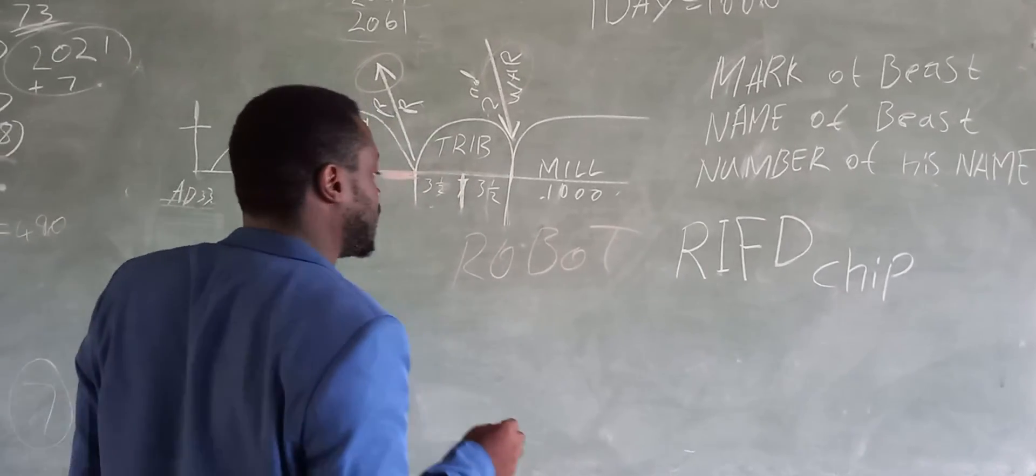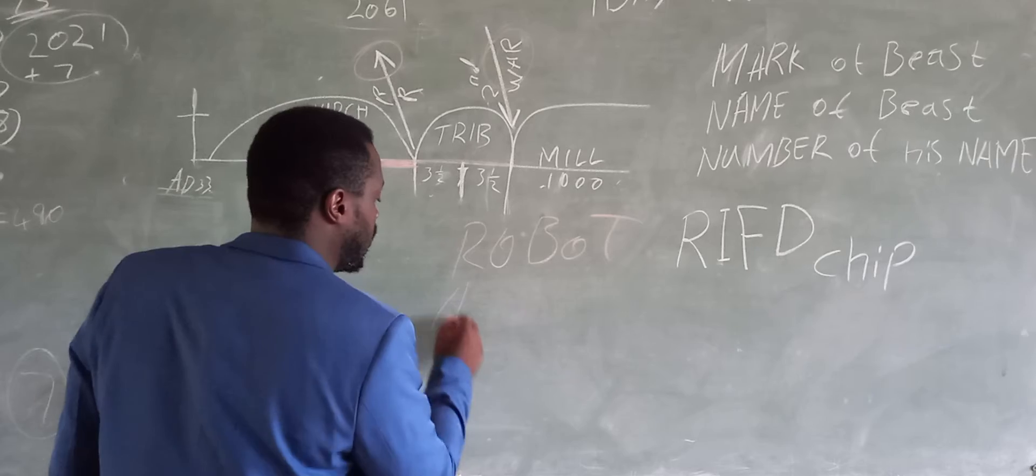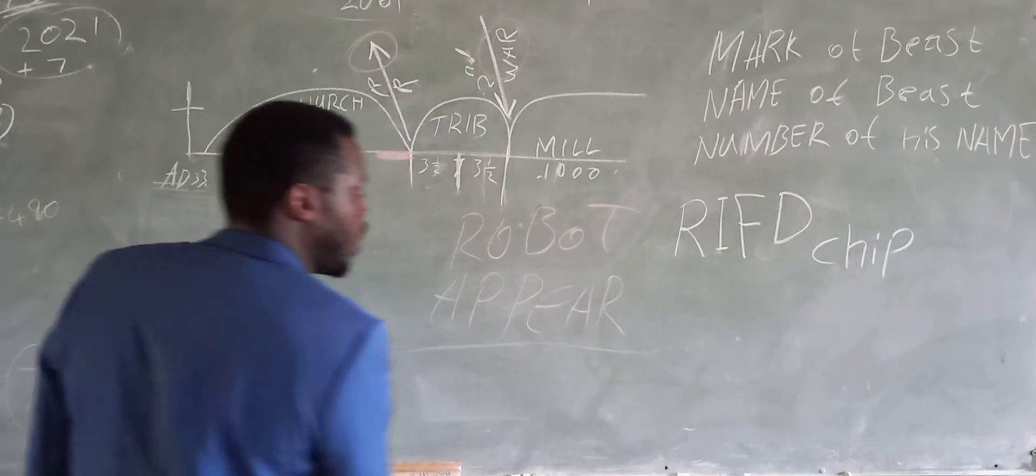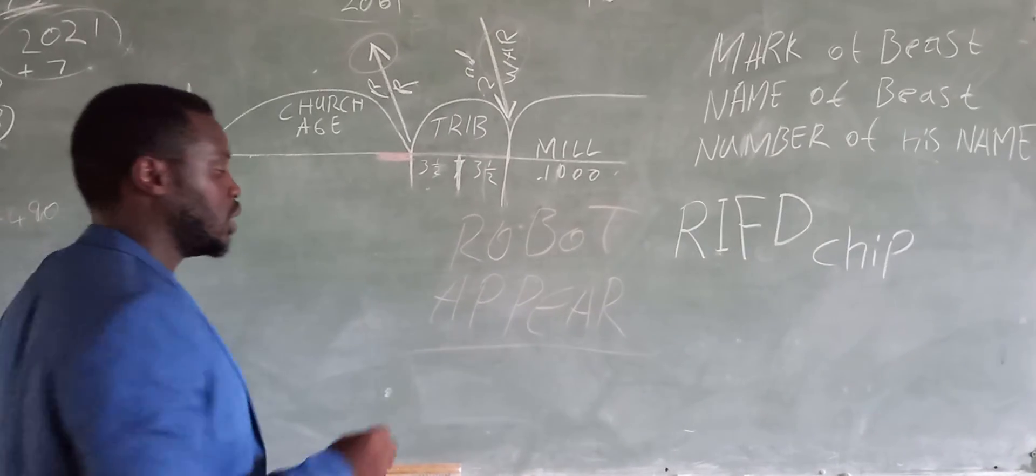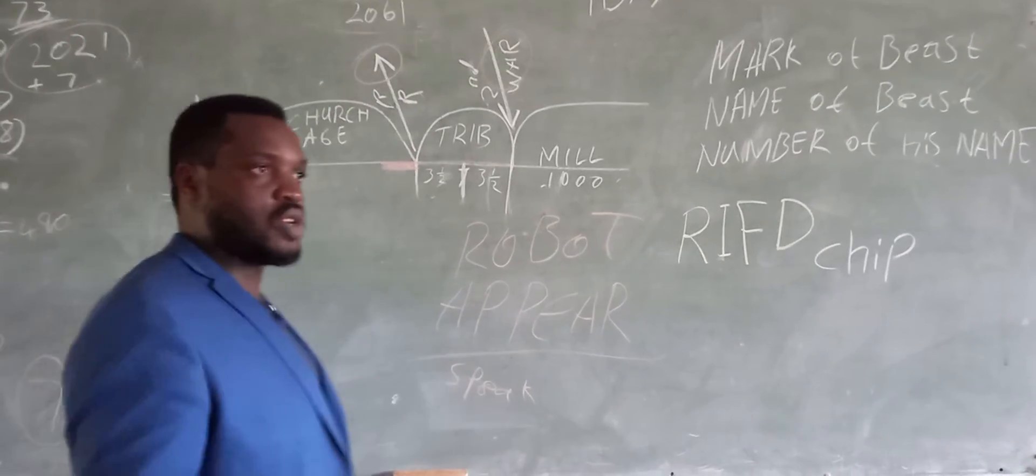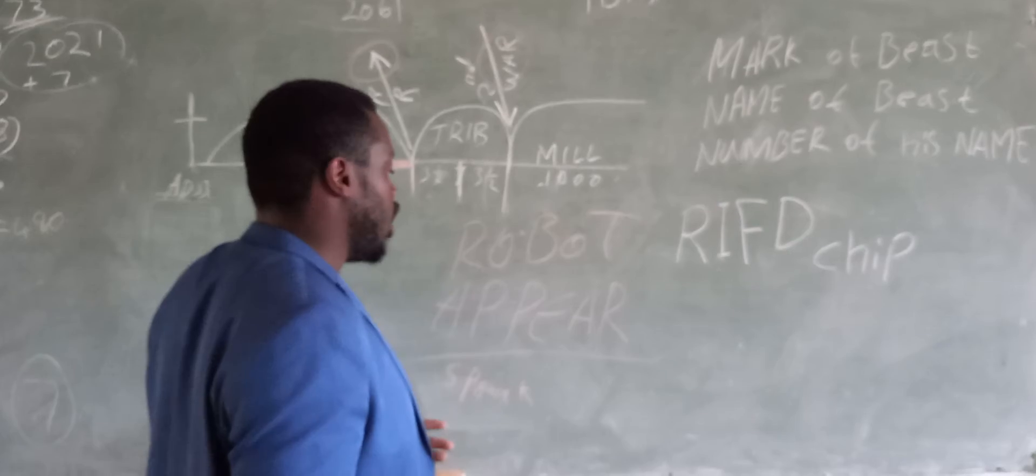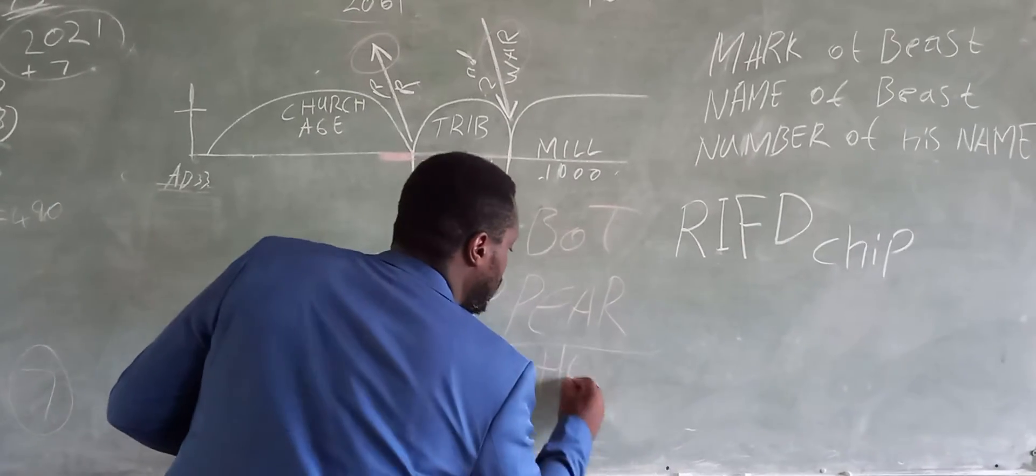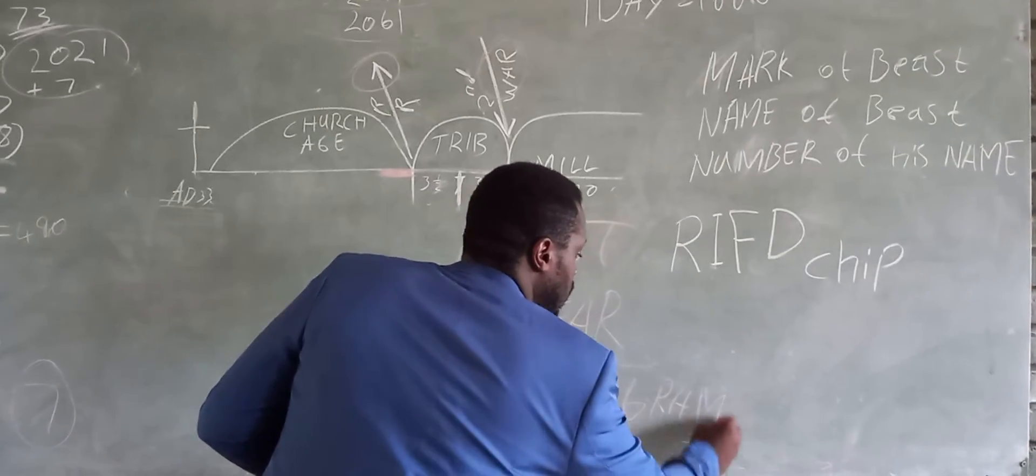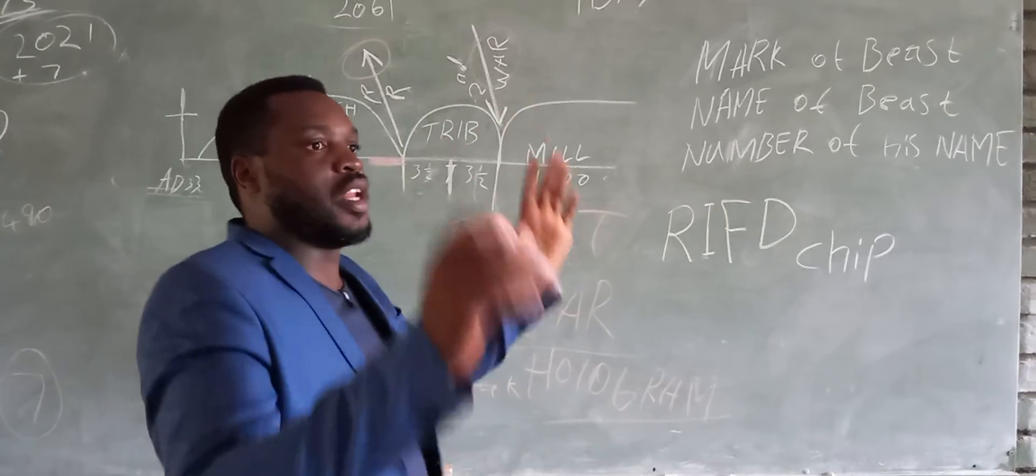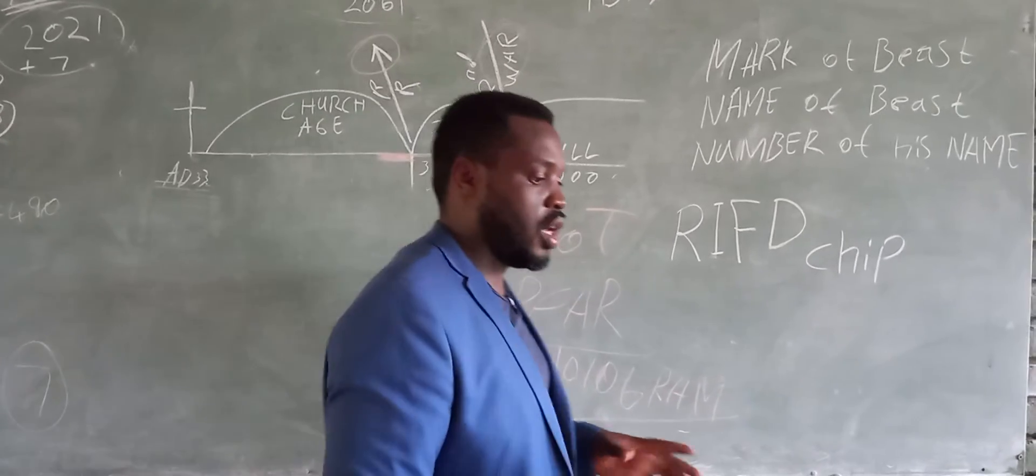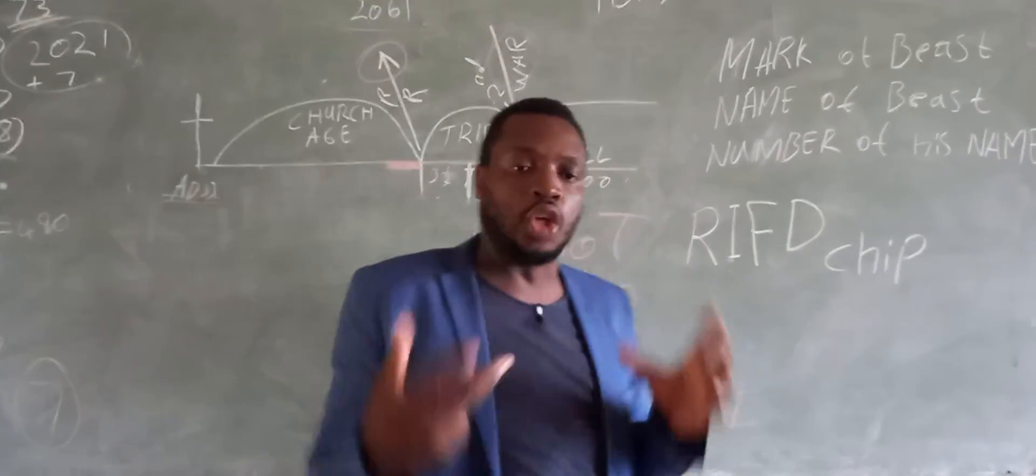A robot that can appear everywhere. This robot can speak. This robot - it's like an image. I do believe it's something that has to do with hologram. Something that can appear in a place - you have seen it in China - it can appear as an image but it can speak, it can have sound.